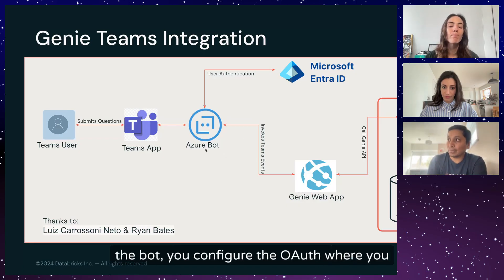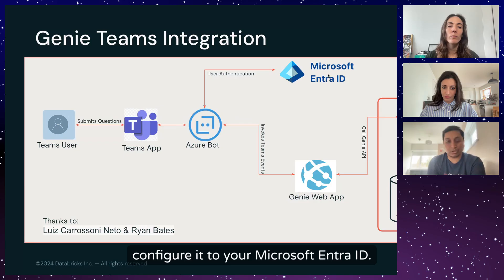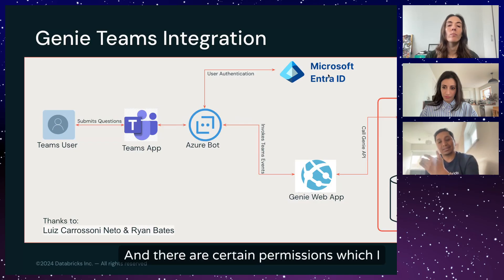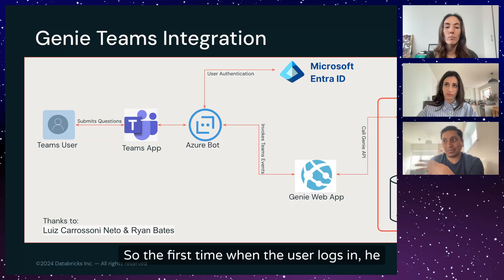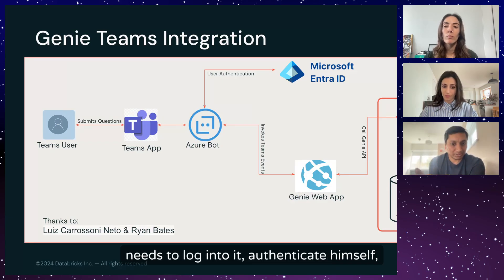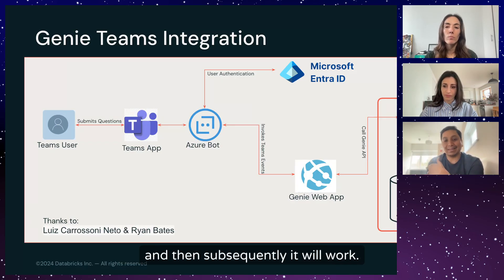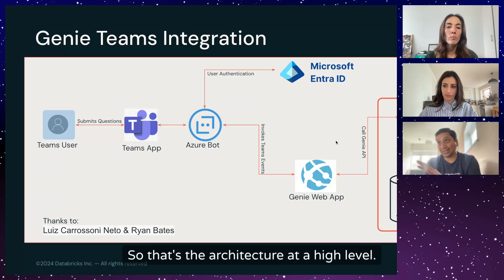In the bot, you configure OAuth where you configure it to your Microsoft Entra ID. There are certain permissions which I will cover in a moment that you need to authenticate. The first time a user logs in, they need to authenticate themselves, and then subsequently it will work automatically. That's the architecture at a high level.